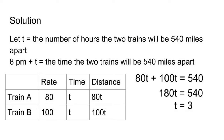Simplifying, we have 180t equals 540. Divide both sides by 180. We have t equals 3. And the time is 8 p.m. plus 3 equals 11 p.m.